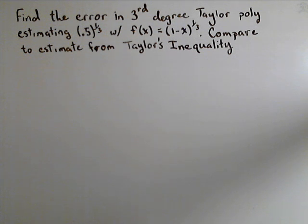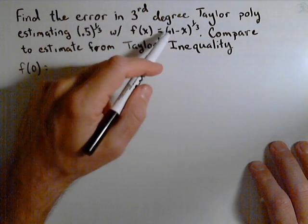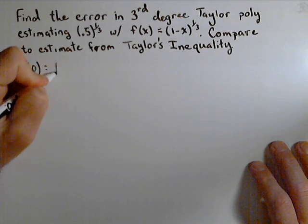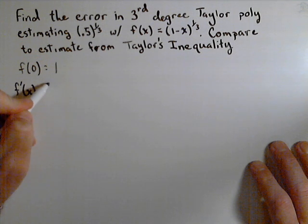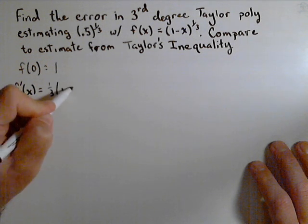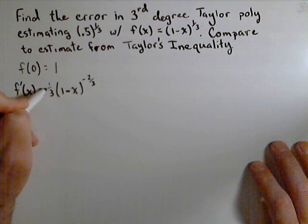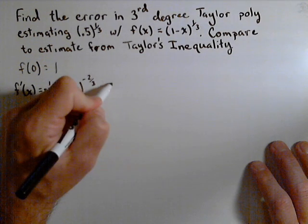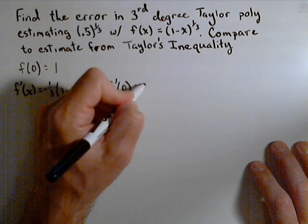So let's see how this plays out for this problem. The first thing we're going to do is we're going to find our Taylor polynomial. So we need some coefficients. We need f evaluated at zero. Well, f of x here is one minus x to the one-third, so it's actually just one. Now we need some derivatives. f prime of x is one-third times one minus x to the negative two-thirds times a negative one because of the chain rule, so we'll make that negative. Therefore, f prime of zero is negative one-third.